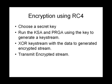To summarize encryption using RC4: we choose a secret key, run the KSA using that key to generate the first permuted array, then pass it to the PRGA to generate the keystream. The number of keystream bytes generated equals the number of bytes we want to encrypt. Once the keystream is generated, we simply XOR it with the data and transmit the encrypted stream.